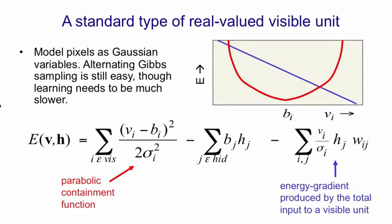And when you add together that top-down contribution to the energy as linear and the parabolic containment function, you'll get a parabolic function, but with the mean shifted away from bi.